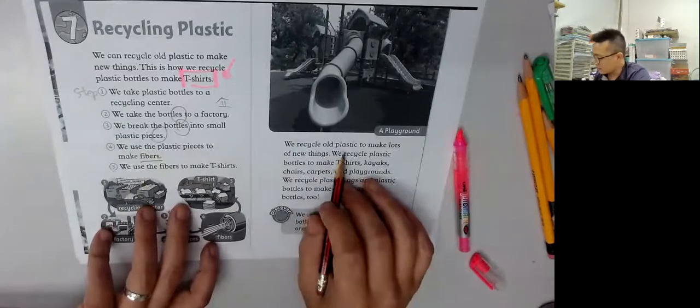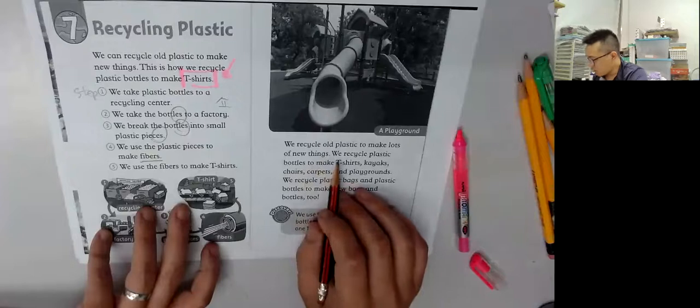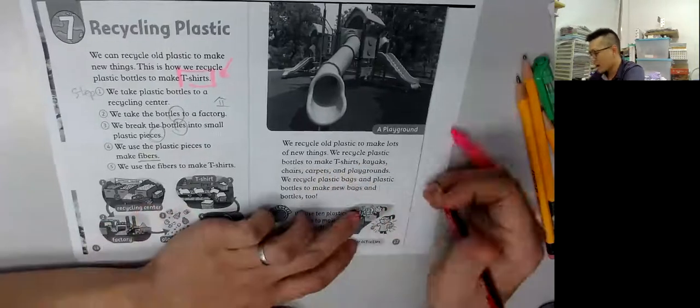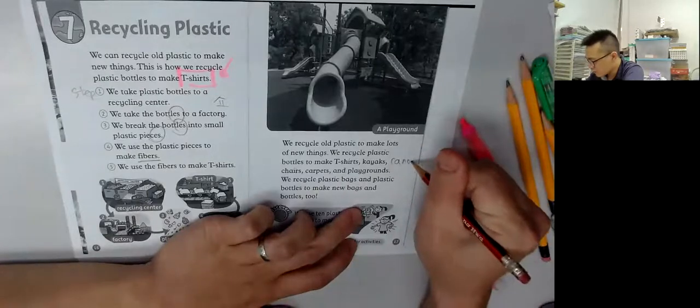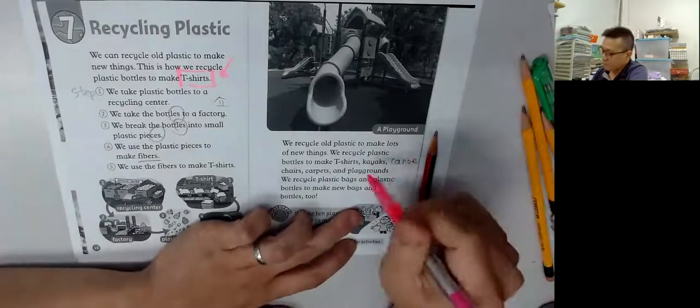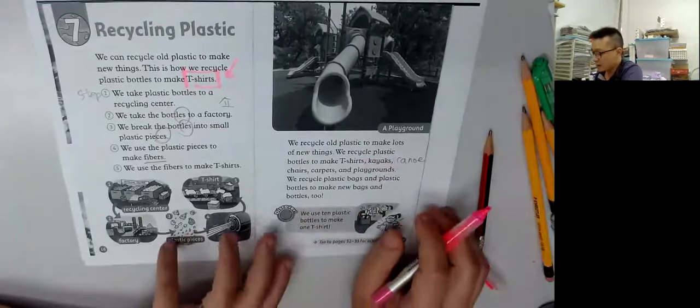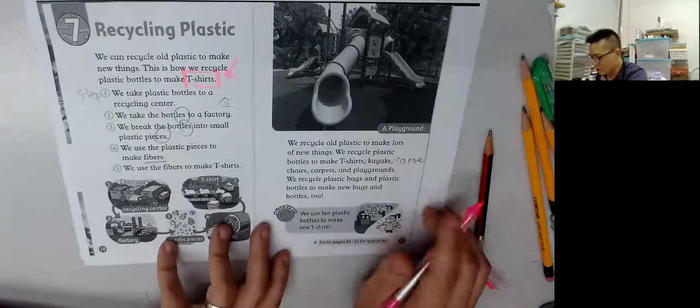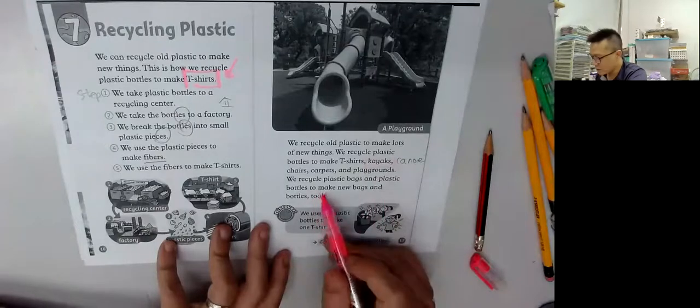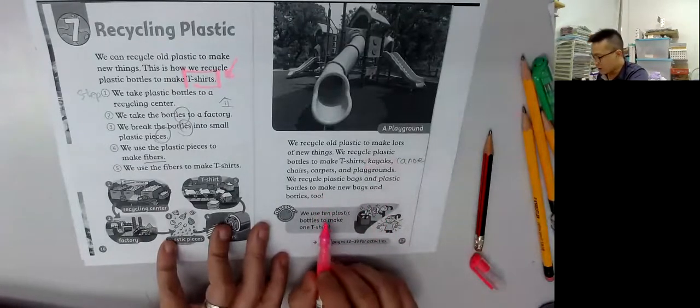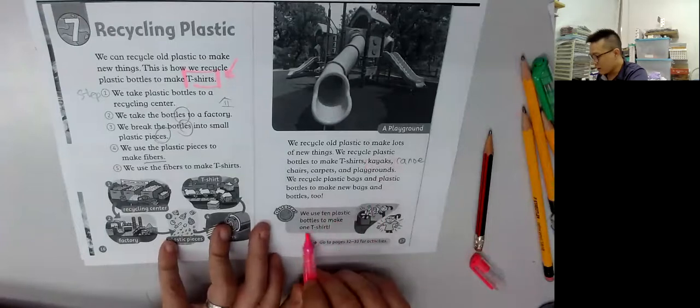We recycle old plastic to make lots of new things. We recycle plastic bottles to make T-shirts, chairs, carpets and playgrounds. We recycle plastic bags and plastic bottles to make new bags and bottles too. We use 10 plastic bottles to make one T-shirt.